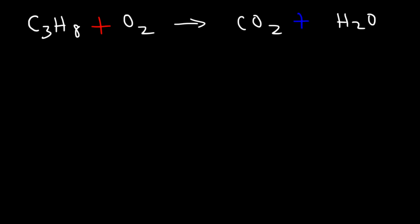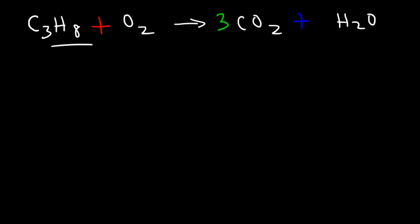Just like before, we're going to balance the carbon atoms first. We have three carbon atoms on the left and only one on the right, so we need to put a 3 in front of CO₂. Next, balance the hydrogen atoms. We have eight hydrogen atoms on the left and two on the right. Eight divided by two is four, so we put a 4 in front of H₂O.